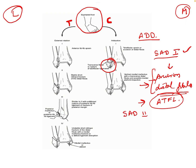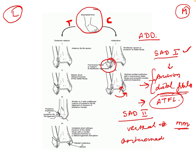In SAD2, when more adduction force is applied, it causes impaction at the medial malleolus level, producing a vertical fracture of the medial malleolus, and there may also be impaction at the anterior medial plafond. These are the two types of injuries seen in supination-adduction.